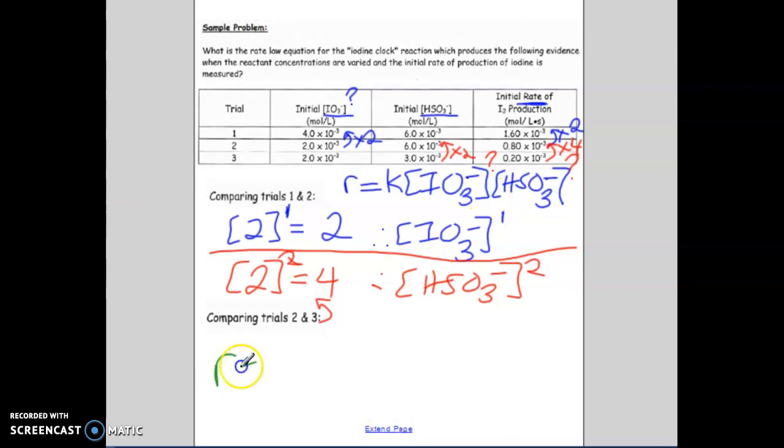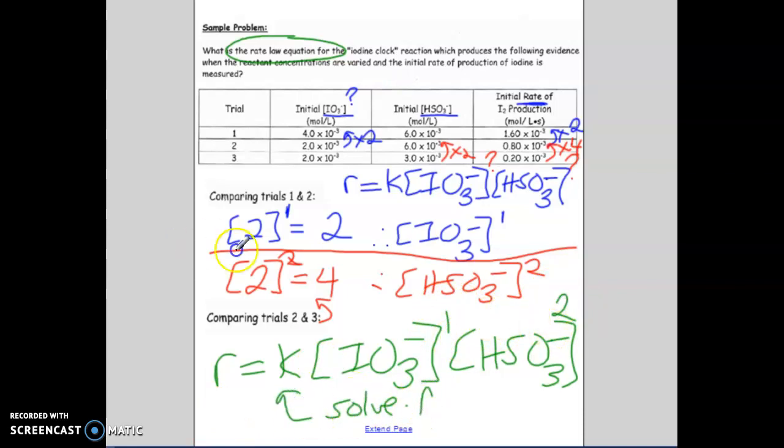So what do we know right now? Right now we know r equals k, we know iodate is to the one, and we know bisulfite is to the two. So the last piece to this, to have a proper, if something asks you to write the rate law equation or the rate law expression, that means that you have to solve for the exponents, and you also have to solve for K. That's the last piece, because actually we cannot solve for this once until we figure out the exponents. So at this point, it's actually just going to be straightforward algebra.